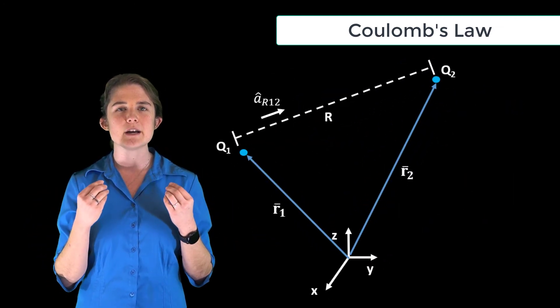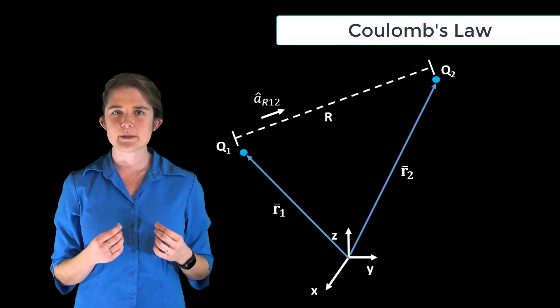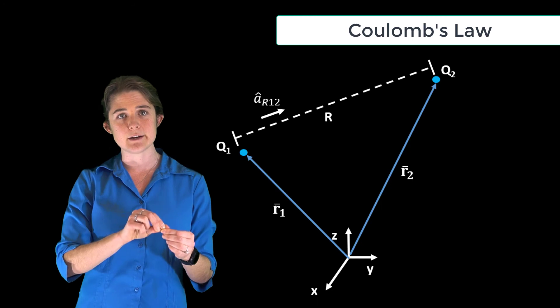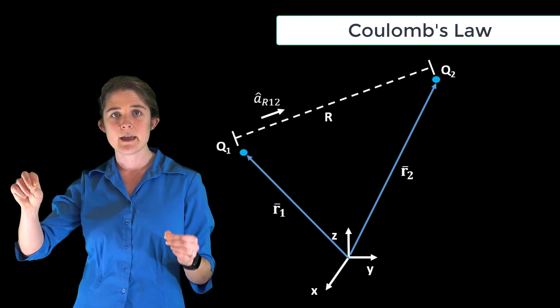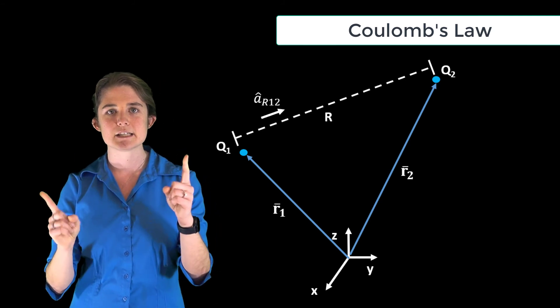Using position vector r1 pointing from the origin to q1 and r2 pointing from the origin to q2, the distance between the two points is the magnitude of the difference between those two vectors, r2 minus r1.